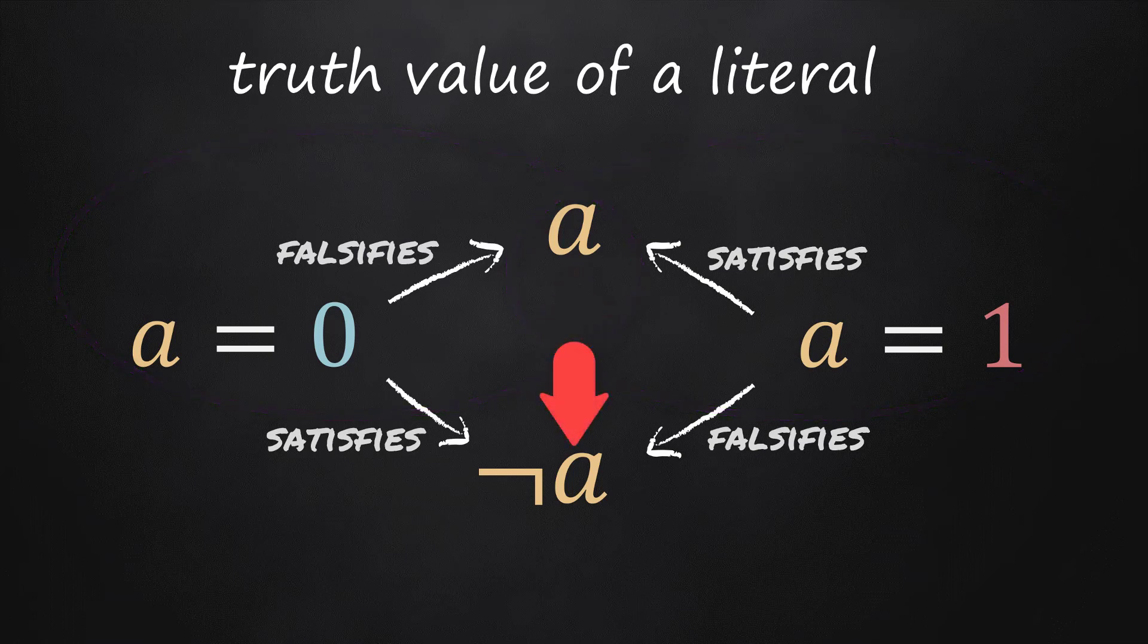Any negative literal, not a, is said to be satisfied if the related variable a is set to false and falsified if the variable a is set to true.